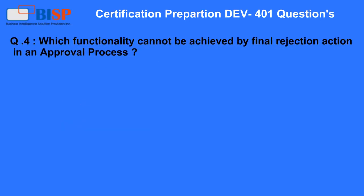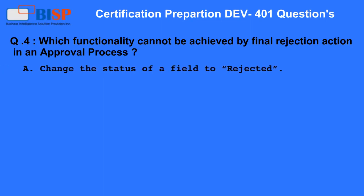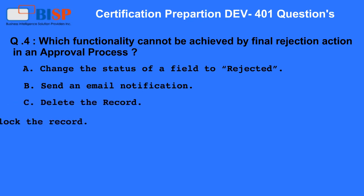Question 4. Which functionality cannot be achieved by the final rejection action in an approval process? A. Change the status of a field to Rejected. B. Send an email notification. C. Delete the record. D. Unlock the record.